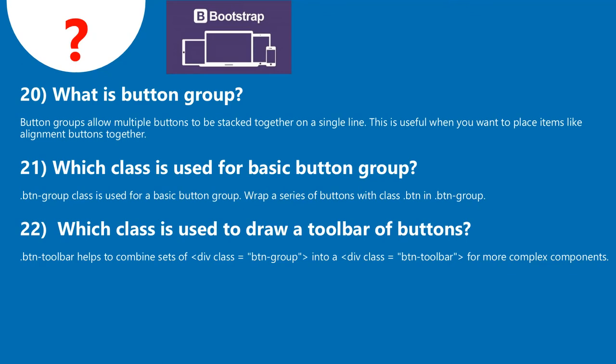Question 20: What are button groups? Button groups allow multiple buttons to be stacked together on a single line. This is useful when you want to place items like alignment buttons together. Question 21: Which class is used for a basic button group? The .btn-group class is used for a basic button group. Wrap a series of buttons with class .btn-group.